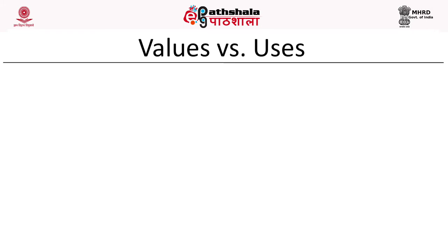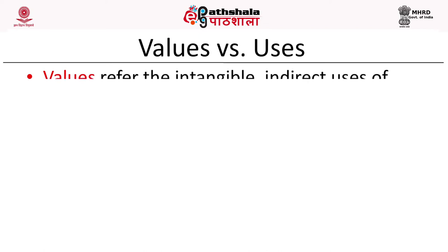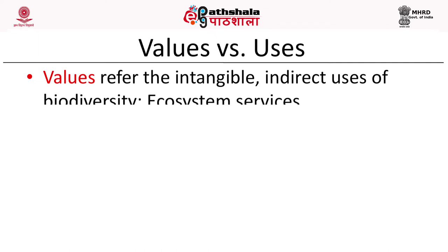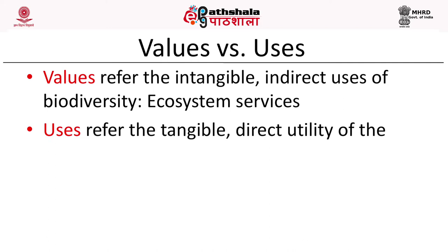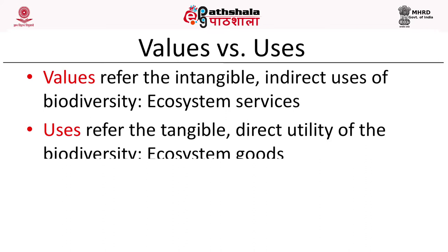What is the difference between values and uses of biodiversity? Values refer to the intangible, indirect uses of biodiversity — also called ecosystem services, which is a synonymous term. Uses refer to the tangible, direct utility of biodiversity: for example, the food we eat or the drugs we use to cure disease. The synonymous term for uses is 'ecosystem goods.' So ecosystem goods and services is the same thing as values and uses of biodiversity.